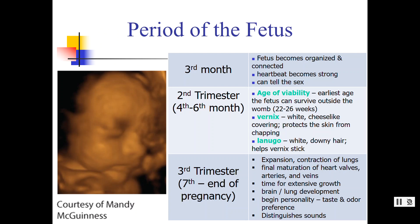In the third month, the fetus starts to become organized. The heartbeat was beating alone, everything was kind of working on its own, and now it's going to start making those connections to be controlled by the brain. During the second trimester, the organism is actually preparing itself for the birthing process.